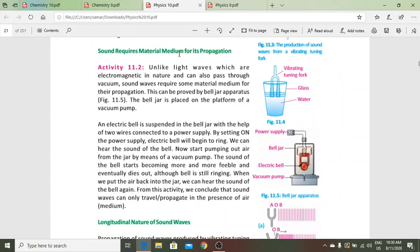Sound requires material medium for its propagation. Unlike light waves, which are electromagnetic in nature and can also pass through vacuum, sound waves require a medium for propagation. We can prove this by a bell jar apparatus. Bell jar is placed on the platform of a vacuum pump.